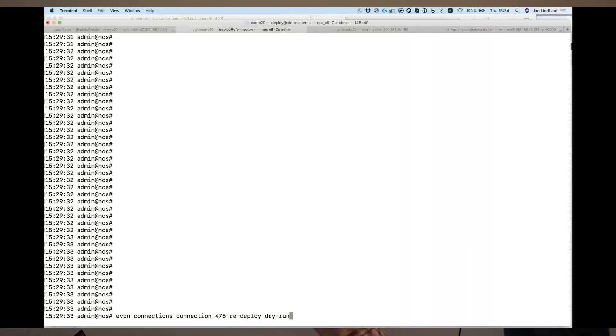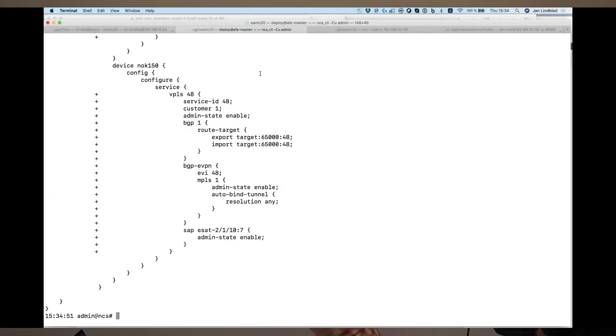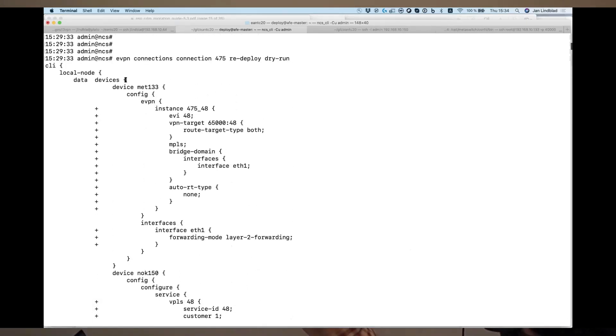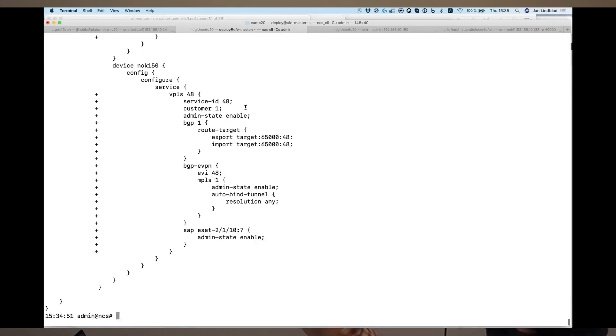So, here we have the Cisco NSO. And we're going to perform a dry run of the service configuration here. So, this shows you the configuration that is going to be sent down from the controller to each device. So, this is the MetaSwitch device. And then, the configuration, it's derived from the Yang models for the MetaSwitch device. And here's the Nokia device with the same approach.